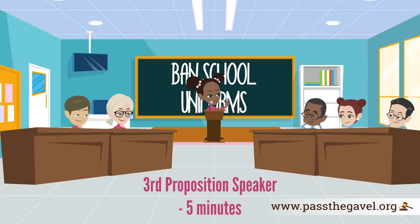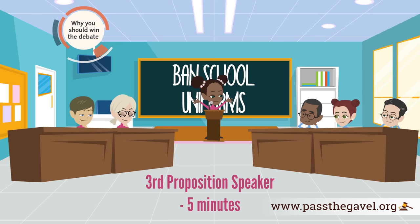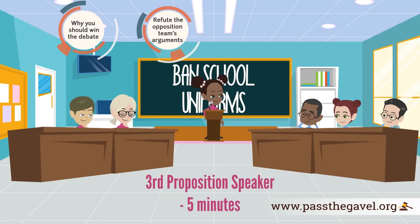The third proposition speaker then speaks for five minutes. As the final speaker in the debate, you should explain why your side should win. This is your team's final opportunity to refute the opposition team's arguments and restate your team's arguments. No new arguments are permitted in the third proposition speech.